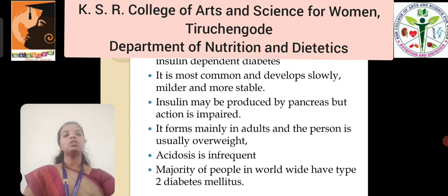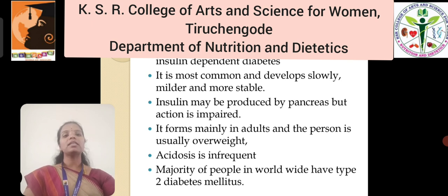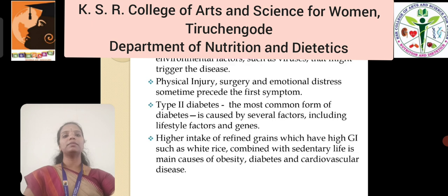Type 2 diabetes is also known as adult onset diabetes or non-insulin dependent diabetes mellitus. It is the most common type and develops slowly, being milder and more stable. Insulin may be produced by the pancreas but its action is impaired. It is found mainly in adults and the person is usually overweight. Acidosis is infrequent. The majority of people worldwide have Type 2 diabetes mellitus.